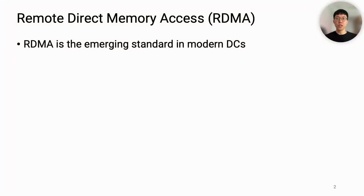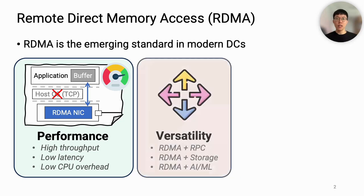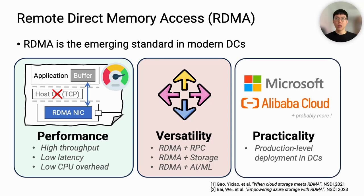RDMA is the emerging standard in modern data centers. It provides high networking performance and low CPU overhead at the same time by offloading transport to NIC hardware and bypassing the host OS. It has shown its versatility with many applications such as RPC, storage, and AI/ML, and showed its practicality with production-level deployment in Microsoft and Alibaba cloud data centers.